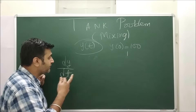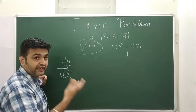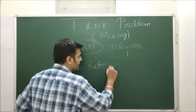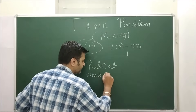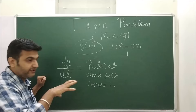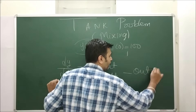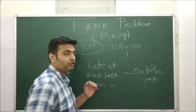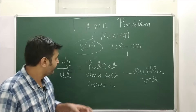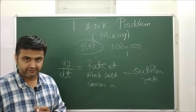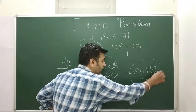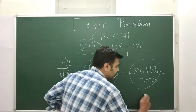So dy/dt is the rate at which the amount of salt changes in the tank. This equals the inflow rate — the rate at which salt comes in — minus the outflow rate — the rate at which salt goes out. This is Equation 1. Now let's find both the inflow rate and the outflow rate and substitute those values.